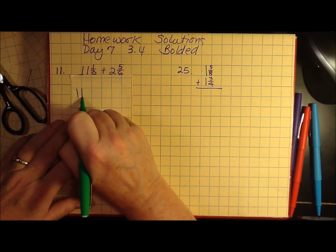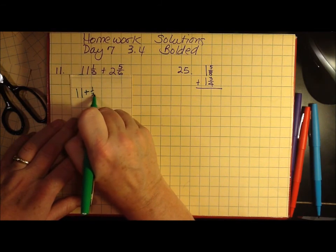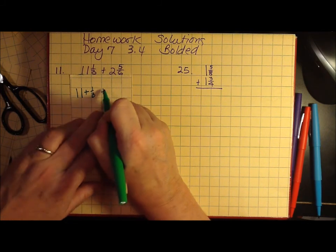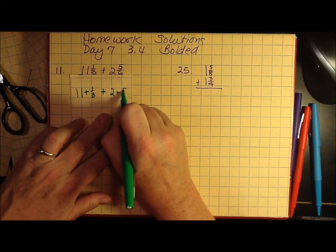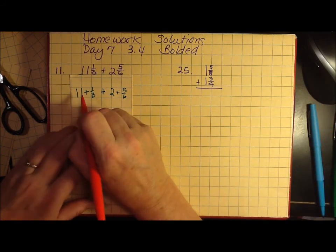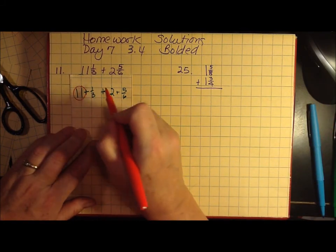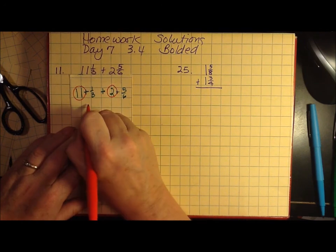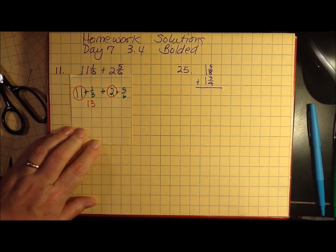So here we have 11 plus one-third plus 2 plus five-sixths. If I were to combine the whole numbers, 11 and 2, I would have 13 as my whole number.